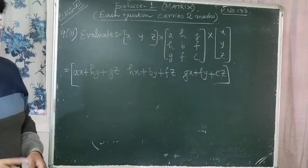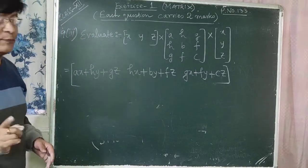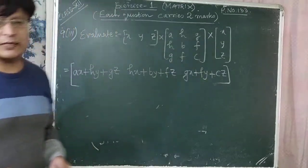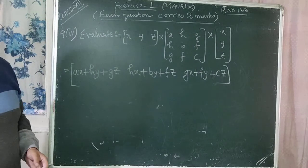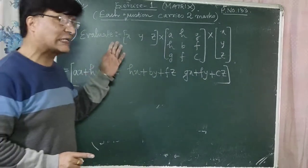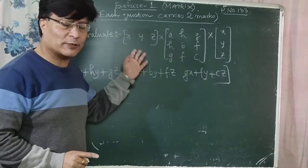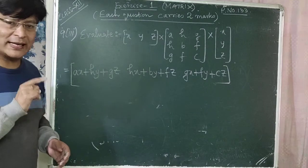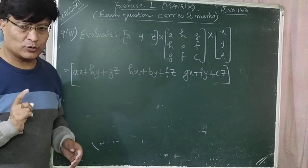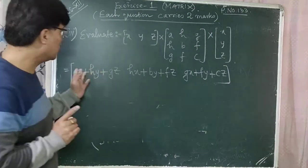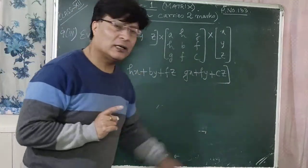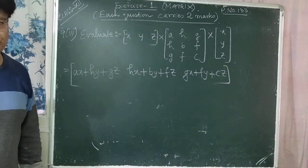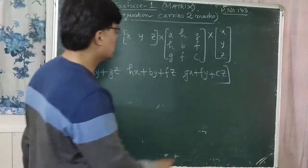The result of the first multiplication is the row matrix [ax+hy+gz, hx+by+fz, gx+fy+cz]. Second and third rows will not be there because the first matrix has only one row. Now we multiply this row matrix by the column matrix [x; y; z].